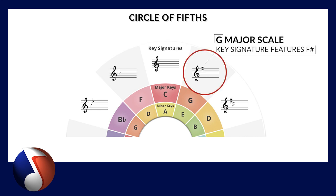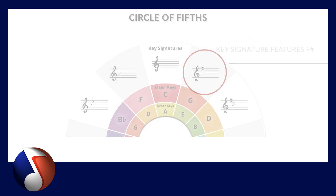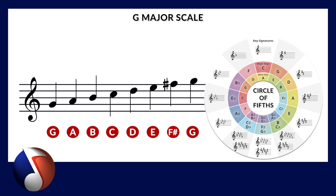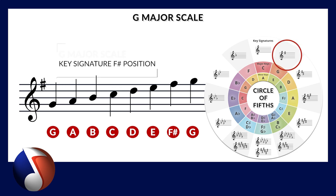By using the circle of fifths we can figure out what sharps are featured in each major scale. In the example of G major, this features the F sharp. Now rather than showing this every time an F note is present, we add the sharp symbol to the key signature, which is placed to the right of the clef.